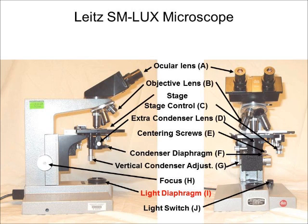On the bottom of the microscope you will find the light source that contains a light diaphragm — not to be confused with the condenser diaphragm. This can be opened and closed by rotating the outer ring, and it regulates the amount of light going into the condenser.